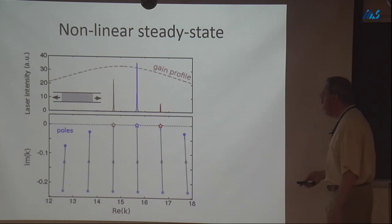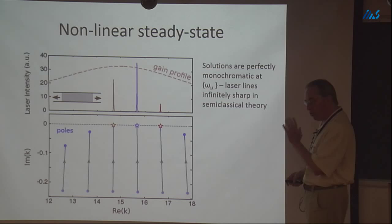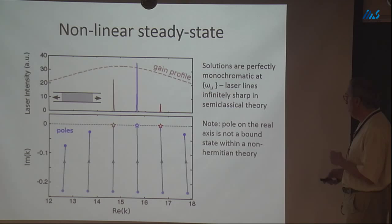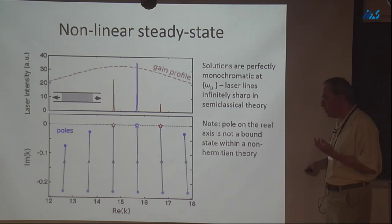Even though we drew the lines with a little width for artistic reasons, actually there's no width at all — the laser lines are infinitely sharp in the semi-classical theory. A pole on the real axis is a bound state. For a Hermitian problem you can have a bound state, even a bound-in-continuum state that won't couple and has no net flux — that doesn't violate conservation of energy. So this pole on the real axis has a totally different meaning from a standard resonance.